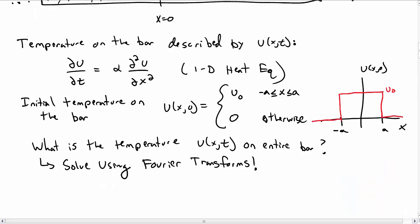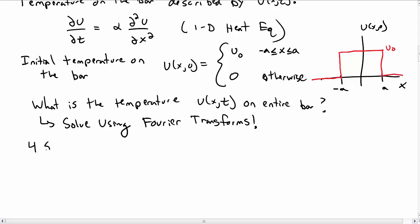The initial conditions we gave were here so that the temperature is only non-zero in some region. So we want to solve this using Fourier transforms and there's four steps to doing that.